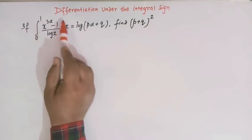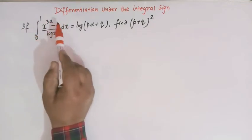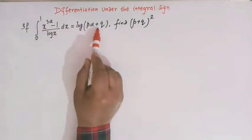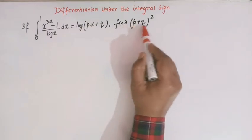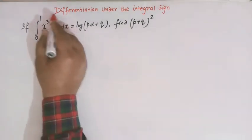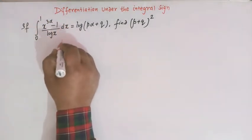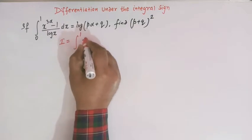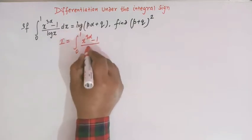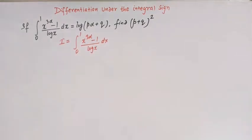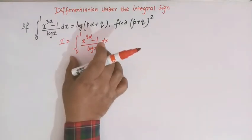We will try to solve this integral, equate that value with the given expression, compare them, and get the values of p and q so we can find the value of the expression. Let us start. First of all, let us take this integral as I, so I equals the integral from 0 to 1 of x raised to 3α minus 1 over log x, where α is some constant.